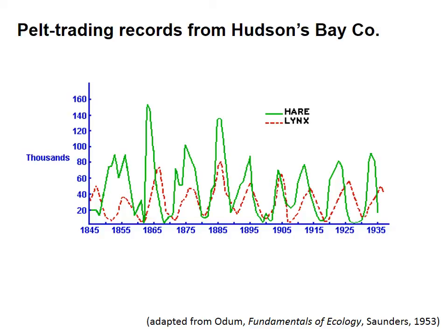Note how the peaks in the hare population are followed by peaks in lynx population. When the lynx population reaches a maximum, the hare population seems to experience a population crash. The scientific literature indicates lynx populations are tightly linked to hare density, but fluctuations in the hare population are not as well understood. The cyclic fluctuations occur on about 8 to 11 year cycles, even without the presence of lynx — these same fluctuations are found on predator-free islands. This suggests there is some other force limiting hare population size other than predation.